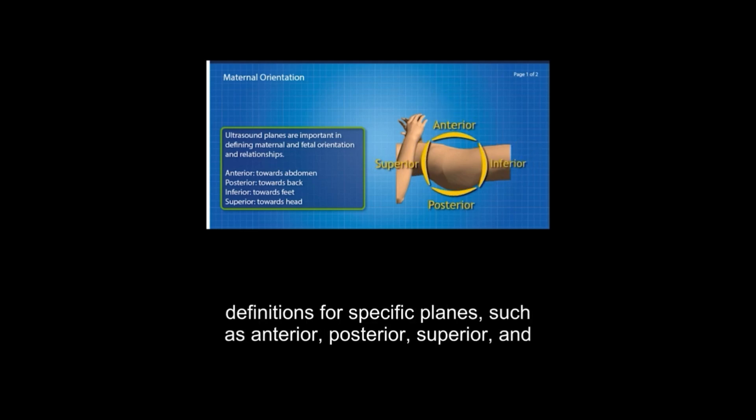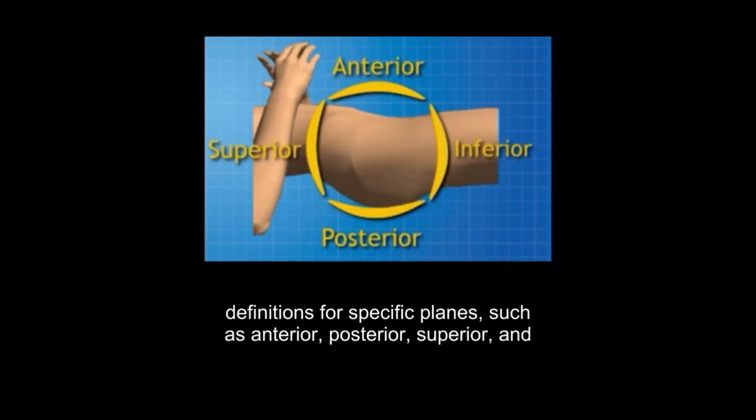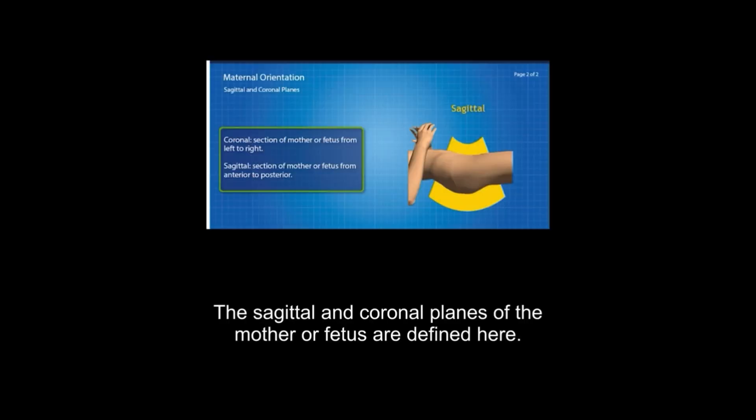In defining maternal and fetal orientations and relationships, the definitions for specific planes such as anterior, posterior, superior, and inferior are important. The sagittal and coronal planes of the mother or fetus are defined here.